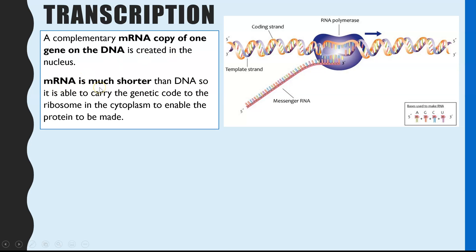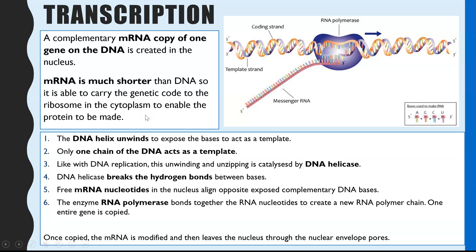Because this is only a copy of one of the genes on DNA — and humans have approximately 23,000 genes — it is a much shorter molecule than DNA. That is why it is small enough to fit through the nuclear pores in the nuclear envelope, and therefore it can move into the cytoplasm and attach to ribosomes.